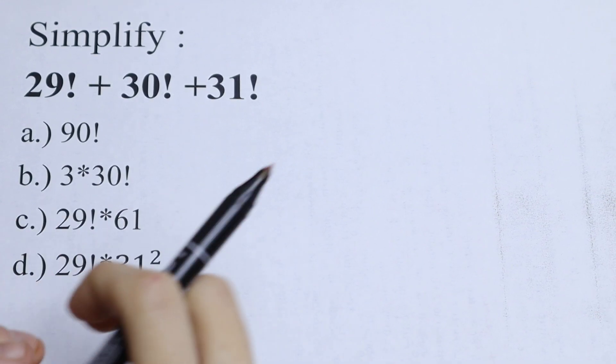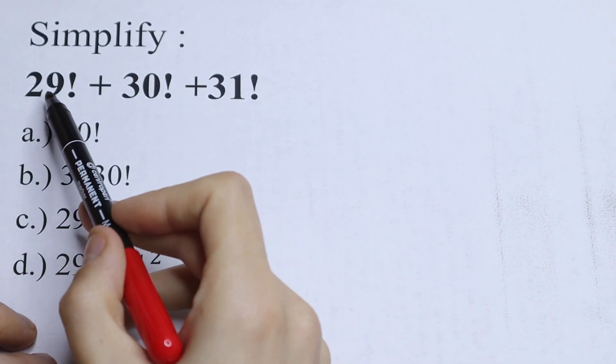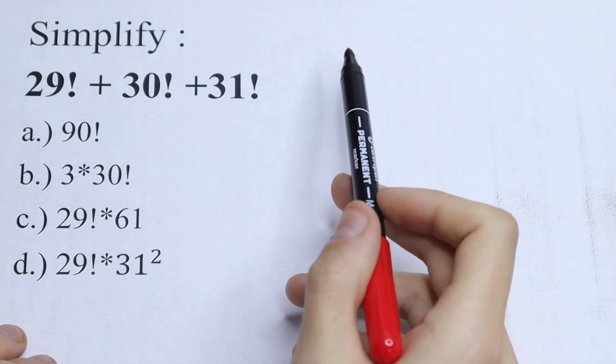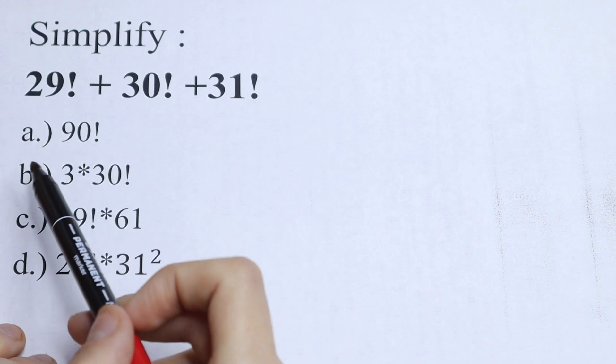Hello everyone, welcome back to MathMood. Here we have an interesting algebra problem: 29 factorial plus 30 factorial plus 31 factorial. We need to simplify this, and right here we have options.